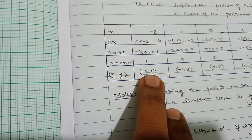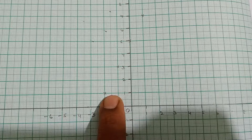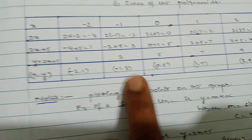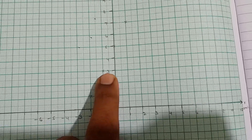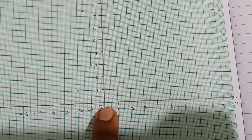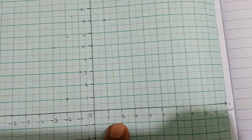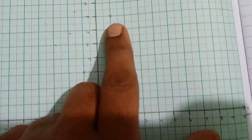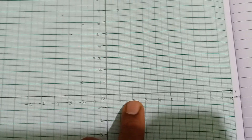Now plot the points: x = −2, y = 1; x = −1, y = 3; x = 0, y = 5; x = 1, y = 7; and x = 2, y = 9. Locate each coordinate on the graph paper accordingly.